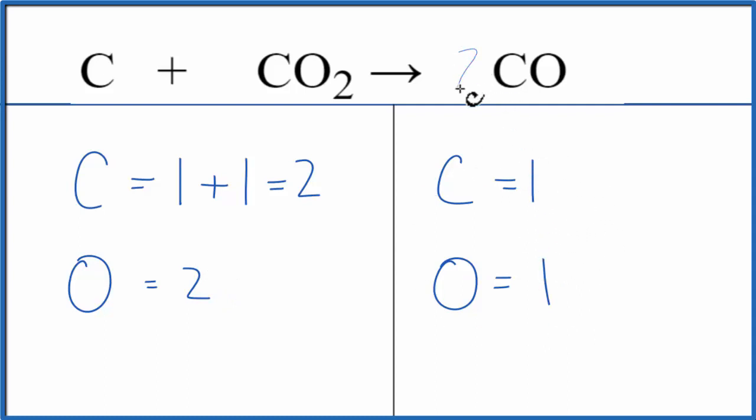So we could put a coefficient of two, and this two applies to everything. So one times two gives us two carbons, so those are balanced.